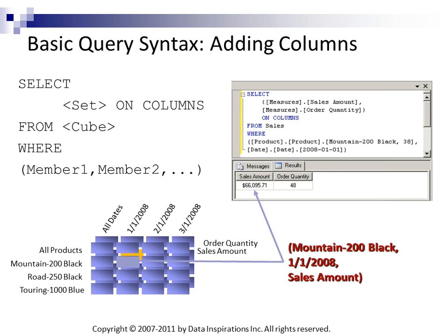With our tuple, when we start moving things into axes, we cannot have an item on columns or on rows and also in the WHERE clause, because collectively these things become a tuple.